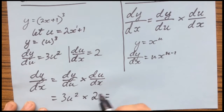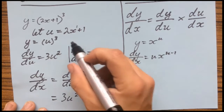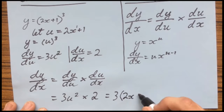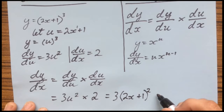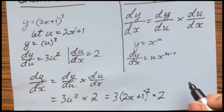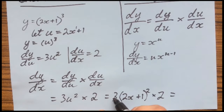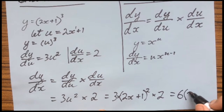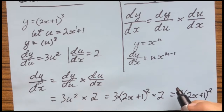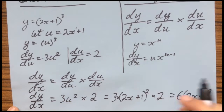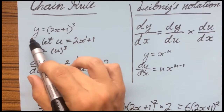Now we can substitute u back in, as we're in the final steps. So we sub u back in and we're left with 3 times (2x plus 1) to the power of 2, times 2. If you want to simplify further, you multiply the 2 with the 3 — the 3 is just multiplied to this — giving 6(2x plus 1) to the power of 2. And that is the derivative of the original function.